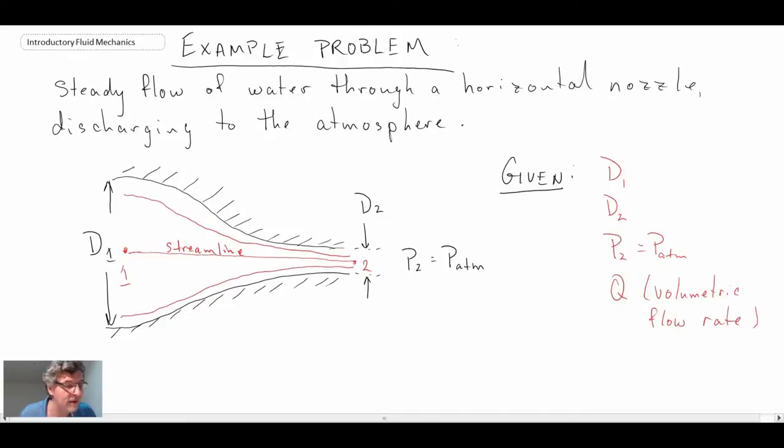What they are asking us to do is find the upstream pressure, the gauge pressure upstream at point one, as a function of the volumetric flow rate Q. In order to do this, we need to make a number of assumptions in order to apply Bernoulli's.